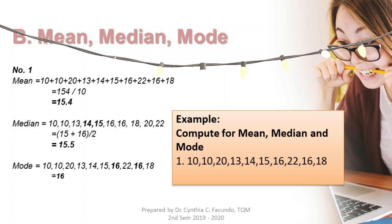What about the mode? If a number is doubled or tripled, then that particular number is the mode. Here we have 10 appearing twice and 16 appearing twice. So the mode is 10 and 16.